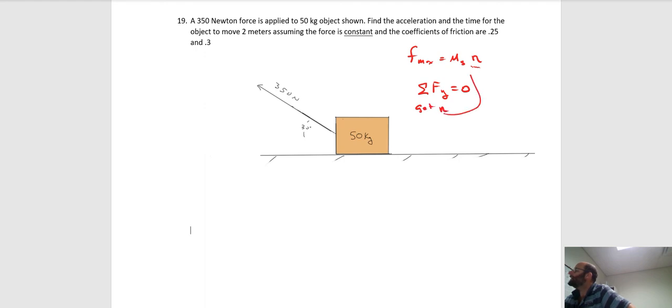Take that normal force, you can now calculate the maximum possible frictional force. Now, if we look at that 350 Newtons and you think about it in component form, it has an x component and a y component. The x component here is the one basically that's trying to accelerate that box. If the maximum frictional force is larger than this, then you know that that box isn't going to go anywhere. The acceleration is zero and you're done with the problem.